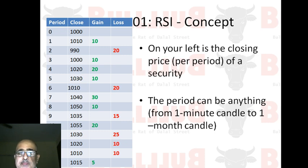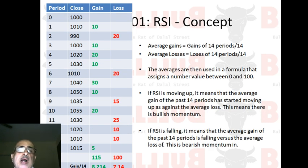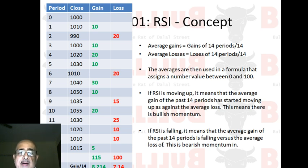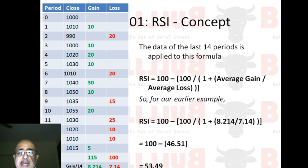What I've done on this slide is totaled up the gains — I'm getting 115 — and totaled up the losses — I'm getting 100. I've then divided both by 14 to calculate the average gain and average loss. The average gain is 115 divided by 14, which gives 8.214, and the average loss is 100 divided by 14, which gives 7.14. I'll explain the other content written on the slides in the second and third videos.